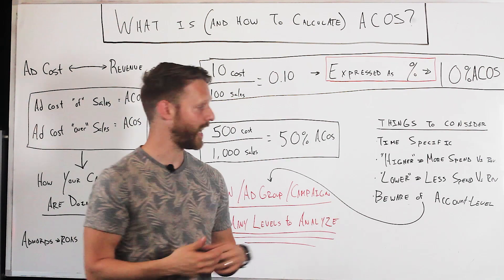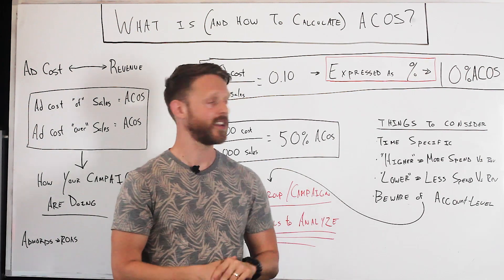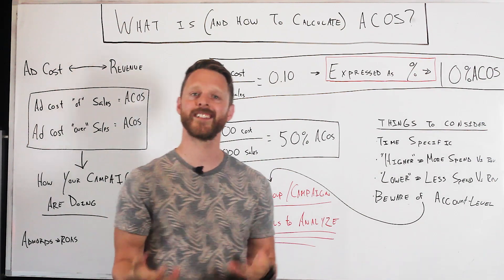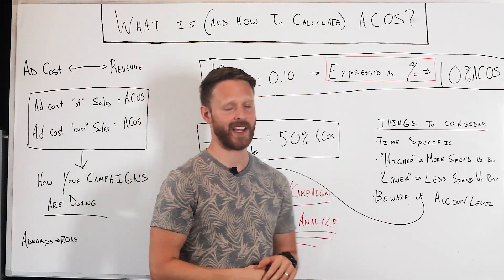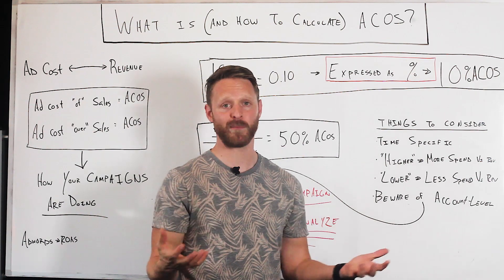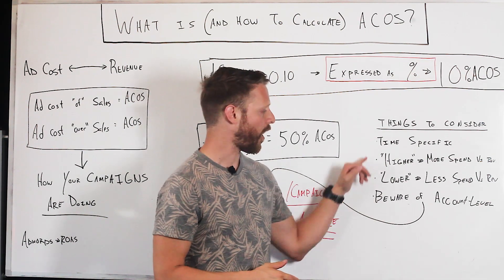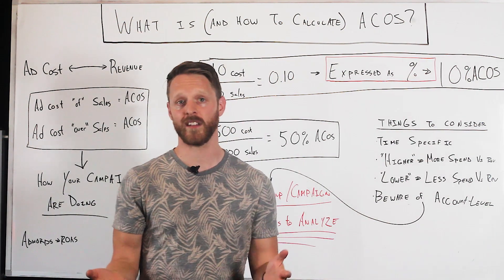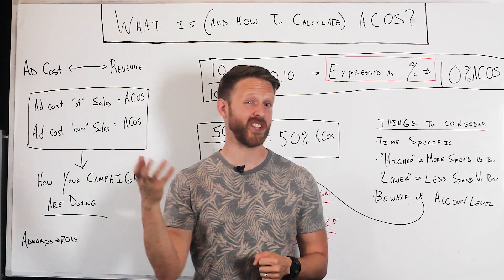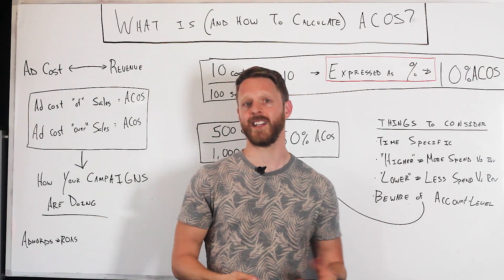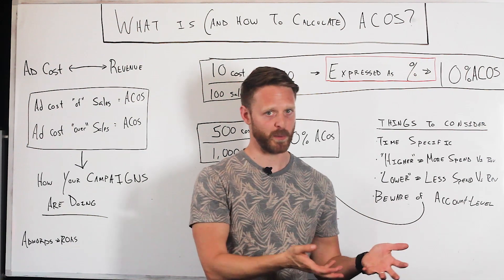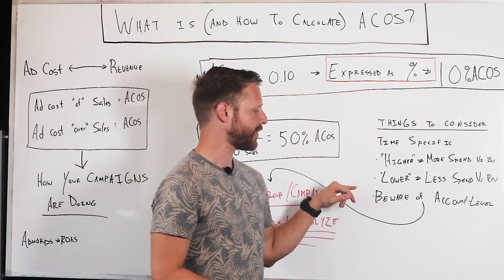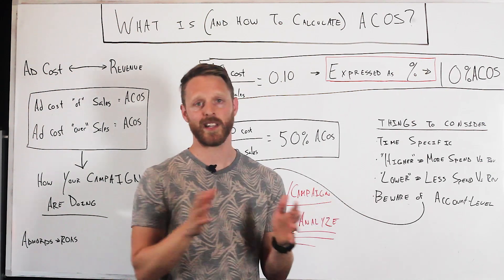In general, people want a lower ACoS as opposed to a higher ACoS. A lower ACoS means you spent less to generate revenue, and a higher ACoS means you spent a lot more to generate that same amount of revenue. So all things being equal, would you rather generate ten thousand dollars worth of sales at a high ACoS like 70 or 80 percent versus a low ACoS at 10 or 20 percent? Everyone would pick the lower ACoS.